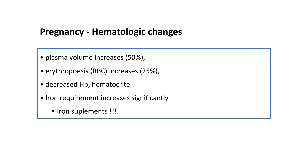Plasma volume increases by 50 percent and erythropoiesis increases by 25 percent. There can be a decrease in hemoglobin and hematocrit, which is why iron supplementation is important during pregnancy. Ideally, women should begin preparing nutritional intake — increasing vitamin D, calcium, folic acid, iron, fish oils, and protein — about three months before pregnancy, continuing throughout and after delivery, especially while breastfeeding.